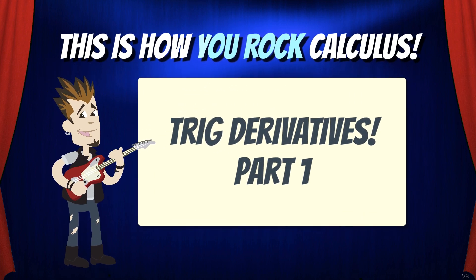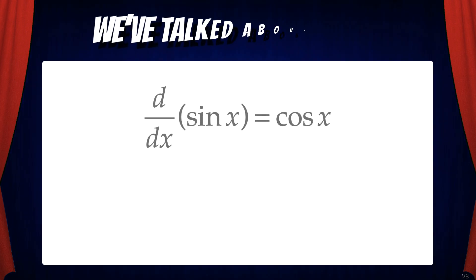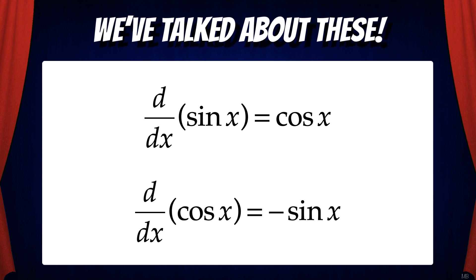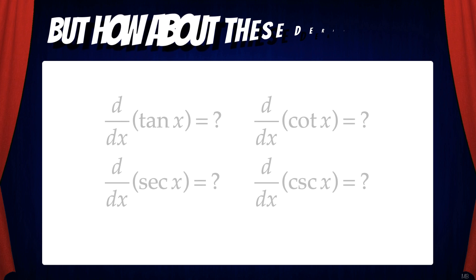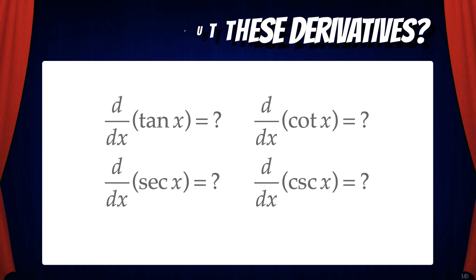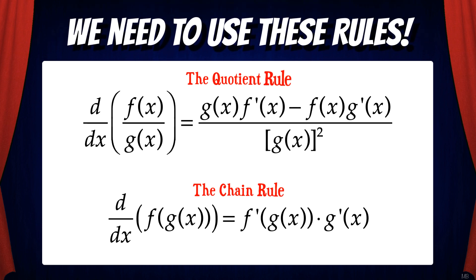Hey everybody! In this video, we're going to be learning about trig derivatives. In prior videos, we've talked about how the derivative of the sine function is cosine, and the derivative of the cosine function is negative sine. But how do we get the derivatives of the other trig functions — tangent, cotangent, secant, and cosecant x? In order to derive these, we need to use the quotient rule or the chain rule. If you need to review these, feel free to watch some of my previous videos.